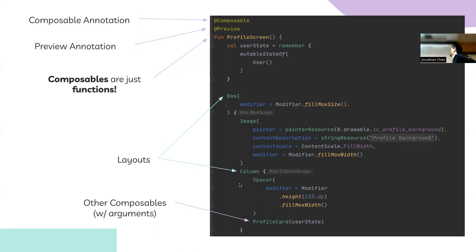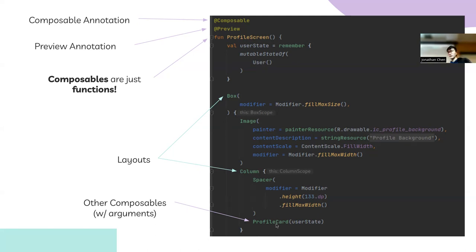Composables are just functions — instead of creating new variables and doing findViewByID, you just write a function and every time you call it, it paints the composable. Column renders all its children in a column. Box is like a FrameLayout — it renders components wherever you say they go, and they can overlap. Image is like ImageView. ProfileCard is another composable function and because it's called inside profileScreen, it's a child of that composable.